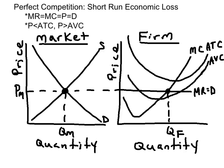A perfectly competitive firm will minimize loss where MR is equal to MC. Here MR is equal to MC, and that is labeled Q sub F — the quantity of the firm.